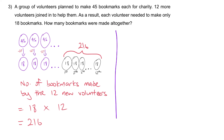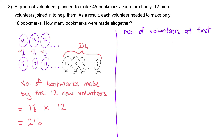From here we can easily calculate how many volunteers there were at first. We just take 216 divided by 27 to figure out how many people there are who each gave away 27 to make up the 216. Number of volunteers at first: 216 divided by 27 — that would be 8. There are 8 people at first, each giving away 27 to make up the 216.